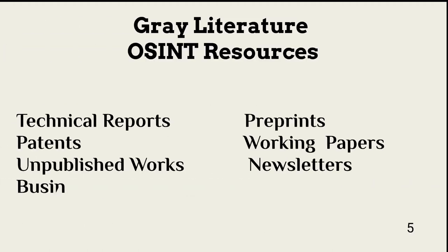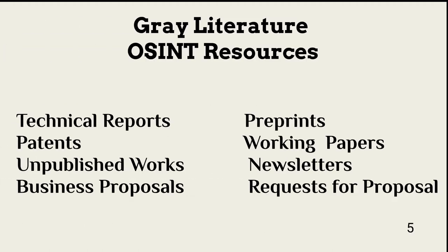Most organizations understand that these resources might contain valuable information needed to identify valuable target resources and how to find them. However, there are other resources known as gray literature that are less likely to be considered when identifying available OSINT. This gray literature includes technical reports, preprints, patents, working papers, unpublished works, newsletters, business proposals, and requests for proposal.